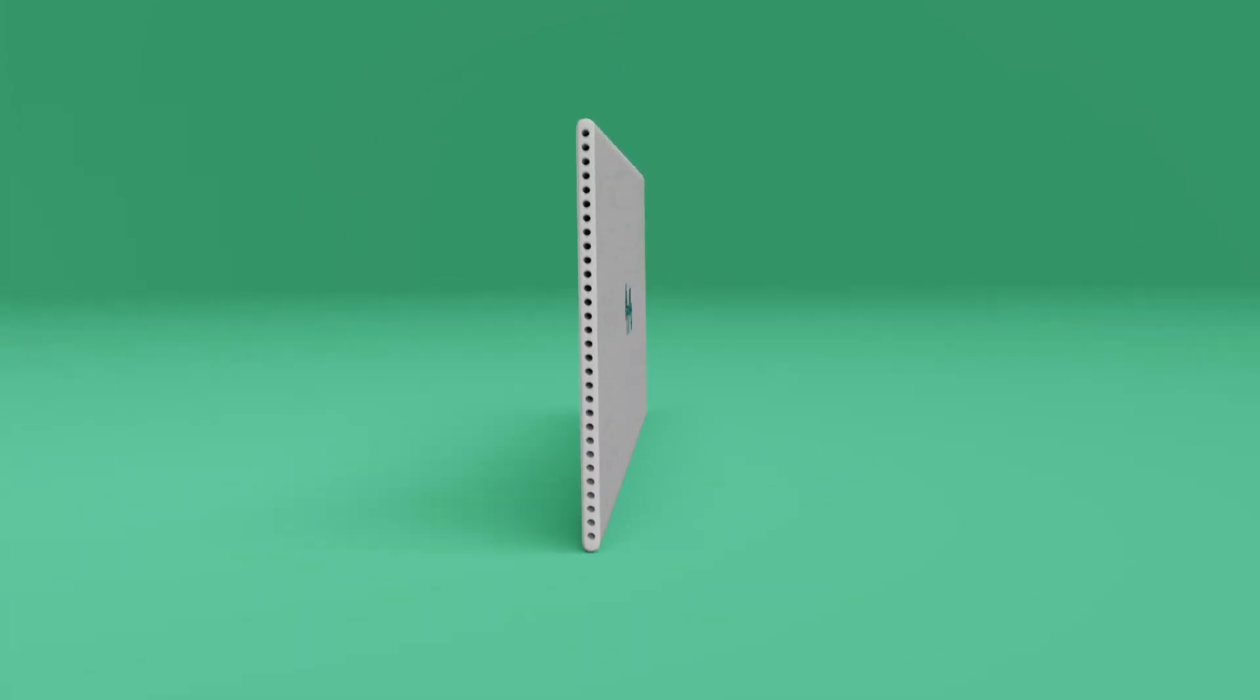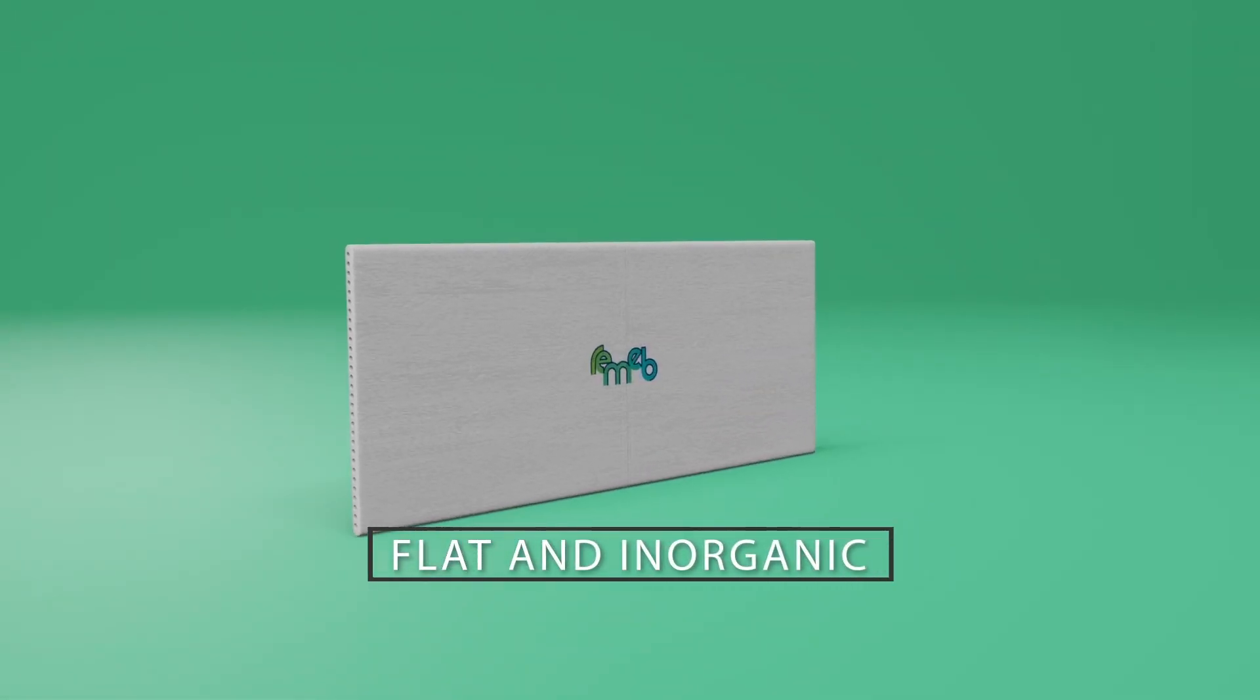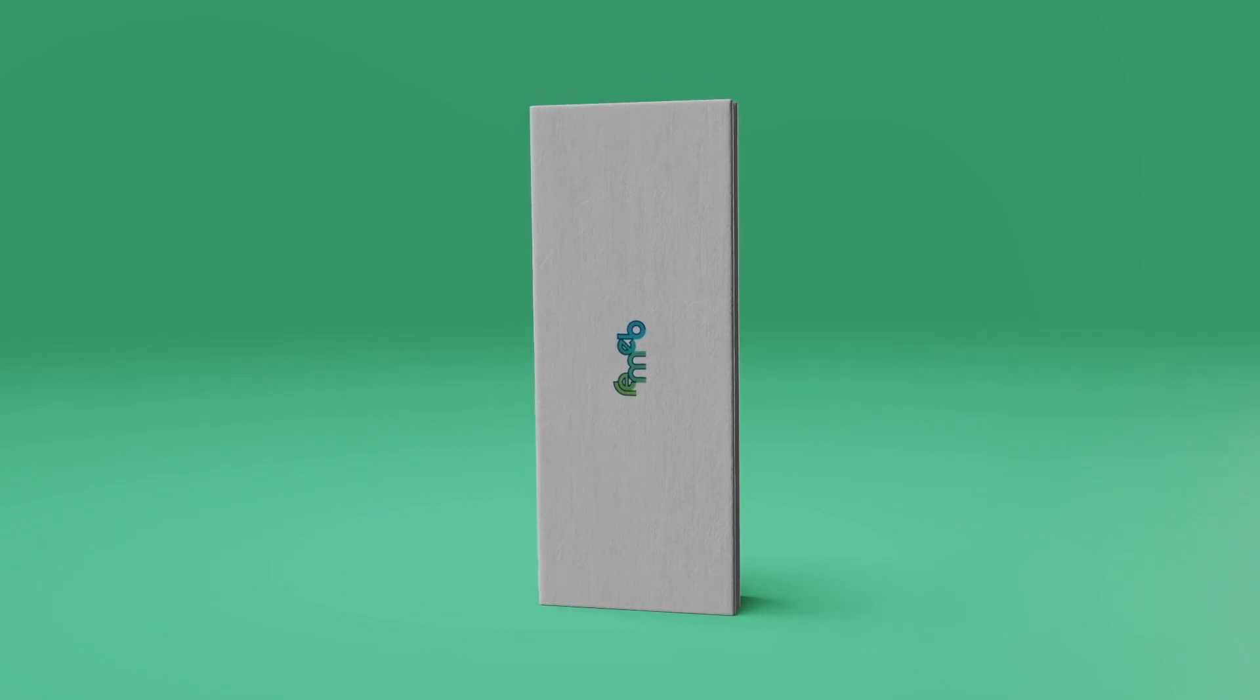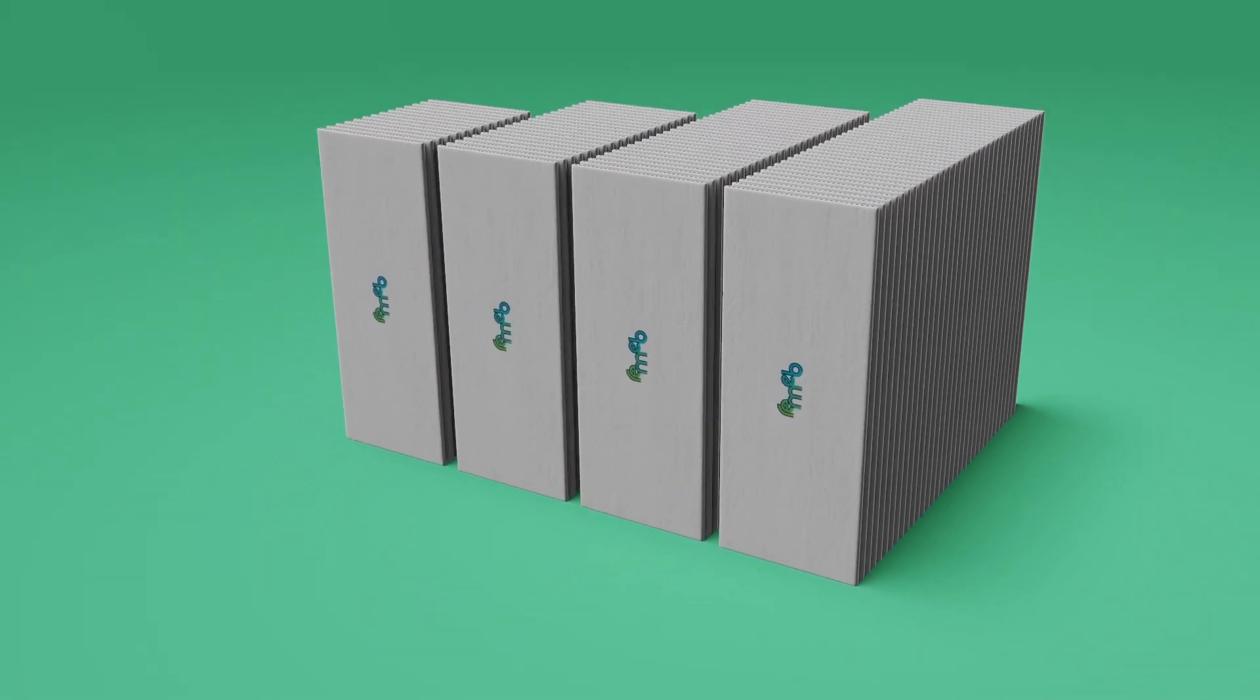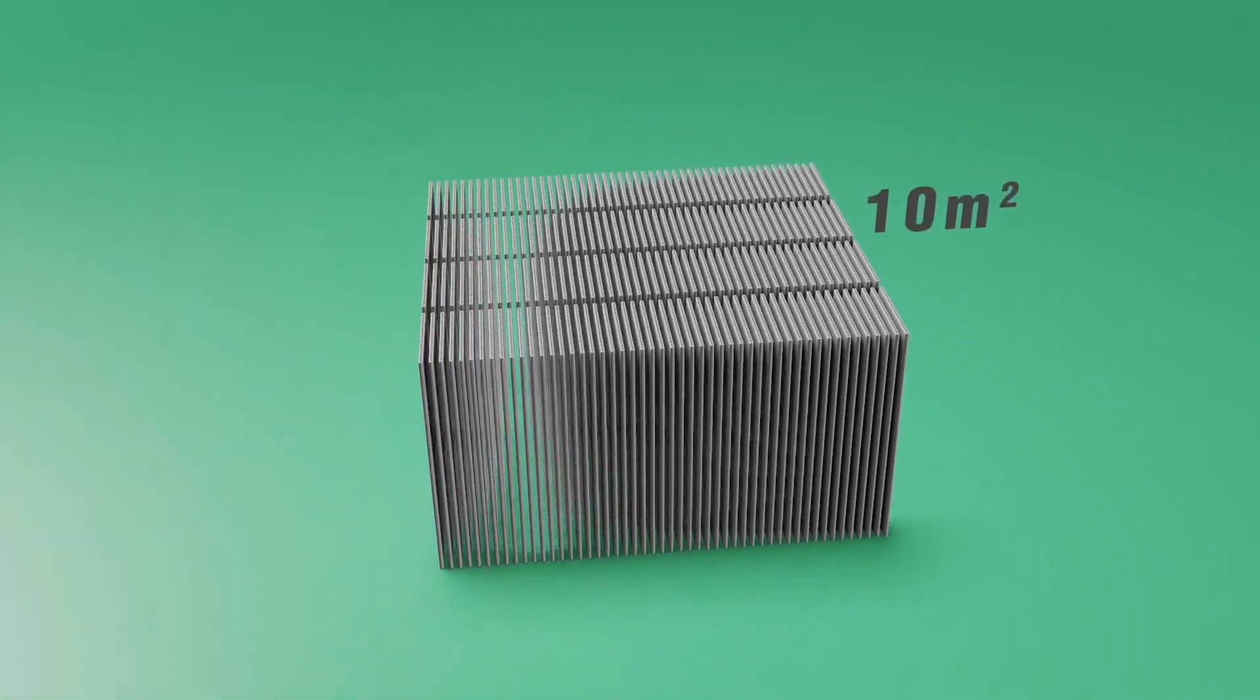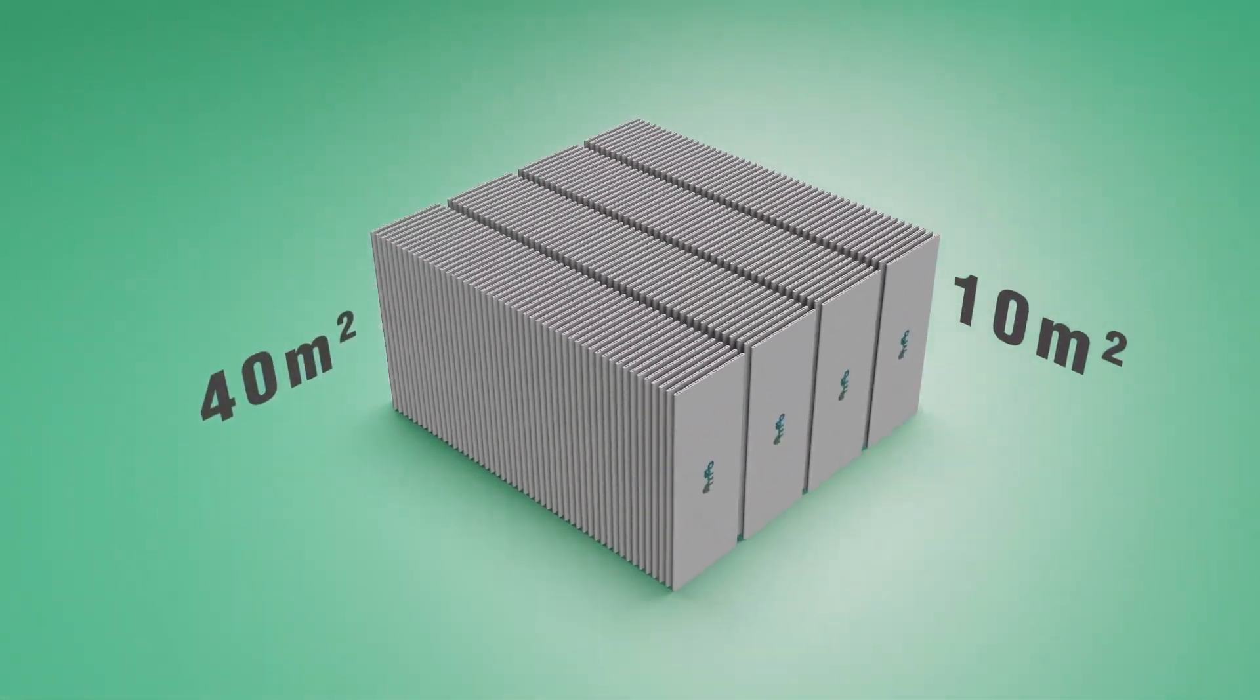The REMEB MBR membranes are flat sheet and inorganic and measure 200 by 500 mm. The system is made up of four modules with 50 membranes in each of them. Each of the modules measures 10 square meters and has a total surface of 40 square meters.